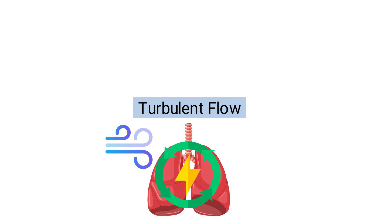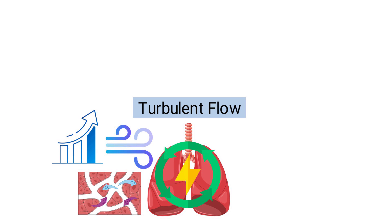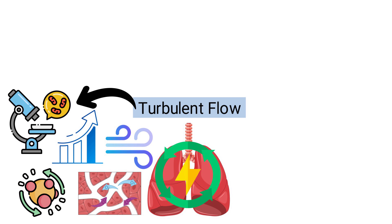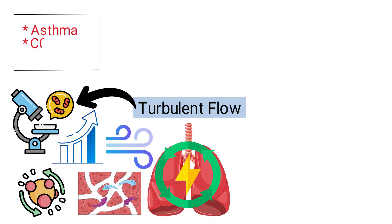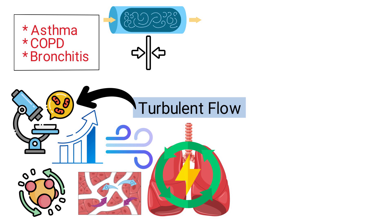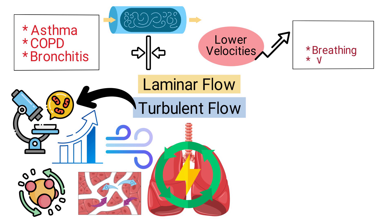Turbulent flow in the lungs can be more efficient at mixing the air, which can be beneficial for enhancing gas exchange under increased metabolic demand. However, turbulent flow can also be indicative of a pathological condition. For instance, in diseases like asthma, COPD, or bronchitis, the airways narrow, altering the flow dynamics. This narrowing can cause a shift from laminar to turbulent flow even at lower velocities, which can contribute to the increased work of breathing and the wheezing sound often heard in these conditions.